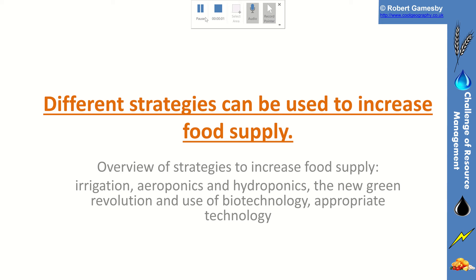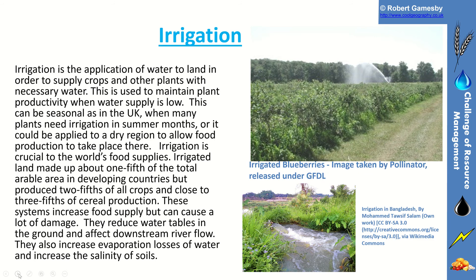Hello and welcome to this GCSE explainer on food supply. This is a positive one today — different strategies can be used to increase food supply. A lot of the topics we've covered so far have been about food insecurity, how people don't have enough access to food, undernourishment, famine. But there are positives: we are capable of producing more food on planet Earth today than we ever have done before, and it's thanks to a lot of these techniques. So we'll go through a few of them.